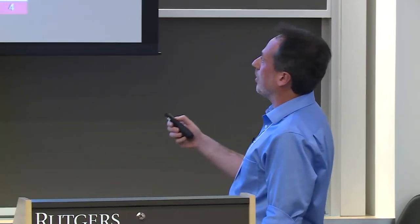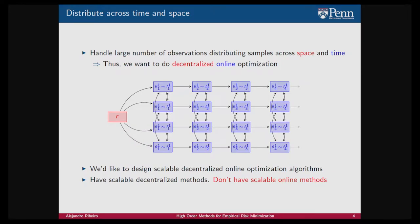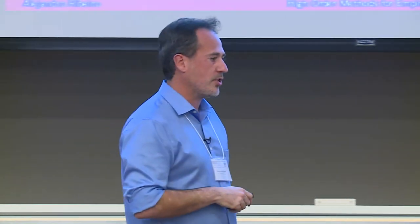The fundamental issue is this: when you distribute across time, you call these problems stochastic; when you distribute across space, you call them decentralized. We don't really have scalable online methods. In stochastic methods, subsets of samples are used at each iteration. The most popular method — perhaps surprisingly — is still stochastic gradient descent, a roughly 70 to 80-year-old algorithm. We know it has problems, but it's still the most popular choice.